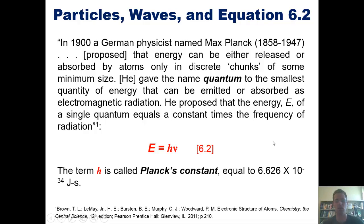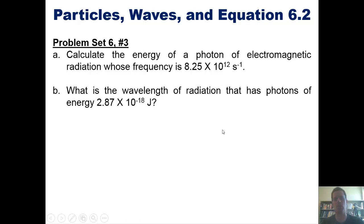This term h is called Planck's constant, which happens to be equal to 6.626 times 10 to the negative 34 joules times seconds. That happens to be one of those values that I've used so many times that I've actually memorized it. And you can too, which brings us to some problems from our problem set.